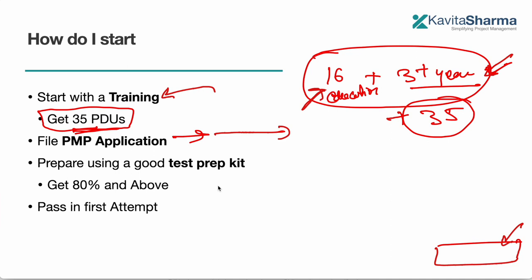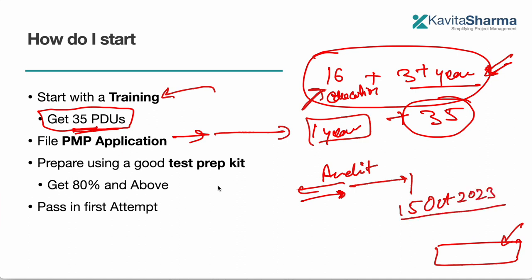Once you are eligible for the exam, you have one year to sit for the exam. So if you apply for your PMP exam today, and PMI asks you certain questions or it may go under audit, after 15 days, let's say on 15th of October, your application is approved, then you can sit for the exam. You can schedule your PMP exam anytime from 15th October to 14th October 2024, which means one year you would have to appear for the exam.